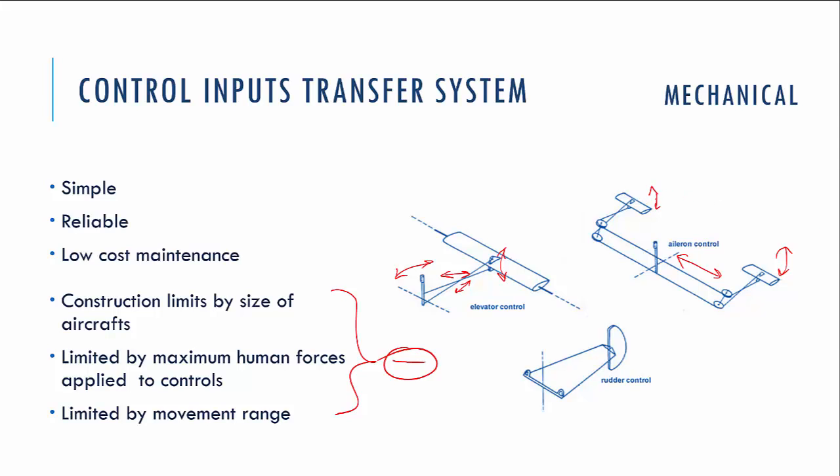With growing aircraft size, we will have more position errors, so controlling the airplane becomes kind of flabby. Also, the mechanical way of connecting control surfaces is limited by the maximum human force that can be applied to controls like the yoke. The bigger the aircraft, the bigger the aileron, flap, and rudder surfaces — so we're limited by the force a pilot can apply to the stick or yoke. We are also limited by the movement range of the controls.